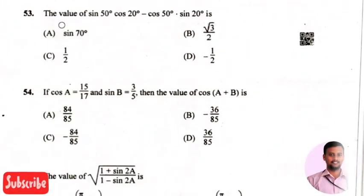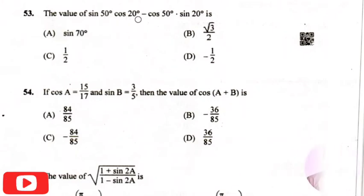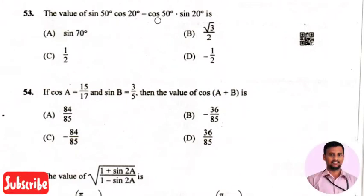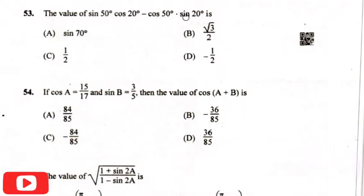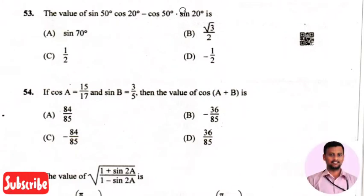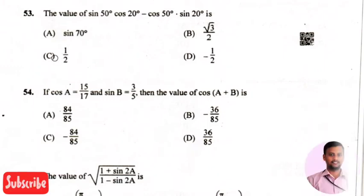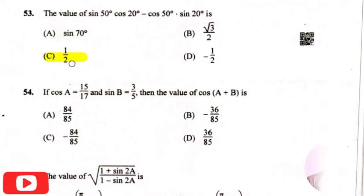The next question is the value of sine 50 cos 20 minus cos 50 into sine 20 — the right answer is option three, that is one by two.